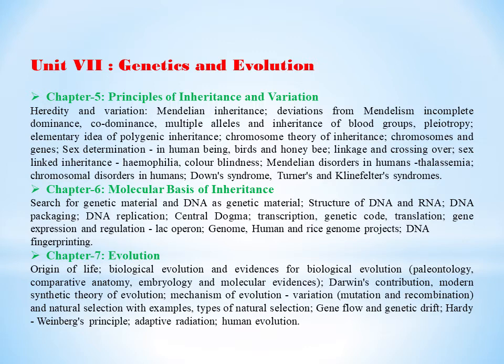Chapter 7, evolution, which is very important. We're going to learn about the origin of life, biological evolution and evidences for biological evolution. Then we're going to learn about Darwin's contributions, modern synthetic theory of evolution, mechanism of evolution, variations, natural selection, and types of natural selection.